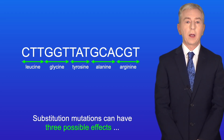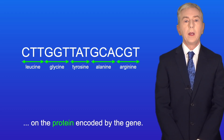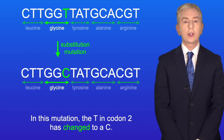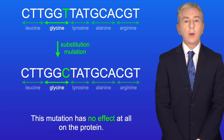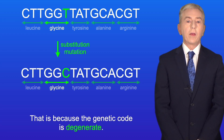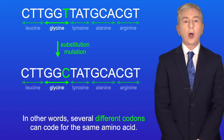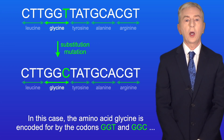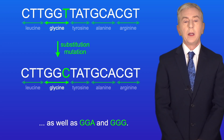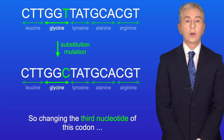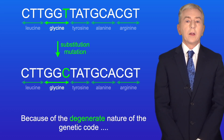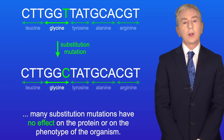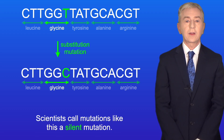Substitution mutations can have three possible effects on the protein encoded by the gene. In this mutation, the T in codon 2 has changed to a C. This mutation has no effect at all on the protein, because the genetic code is degenerate — in other words, several different codons can code for the same amino acid. In this case, glycine is encoded by codons GGT and GGC, as well as GGA and GGG, so changing the third nucleotide of this codon still encodes glycine. Because of the degenerate nature of the genetic code, many substitution mutations have no effect on the protein or the phenotype. Scientists call mutations like this a silent mutation.